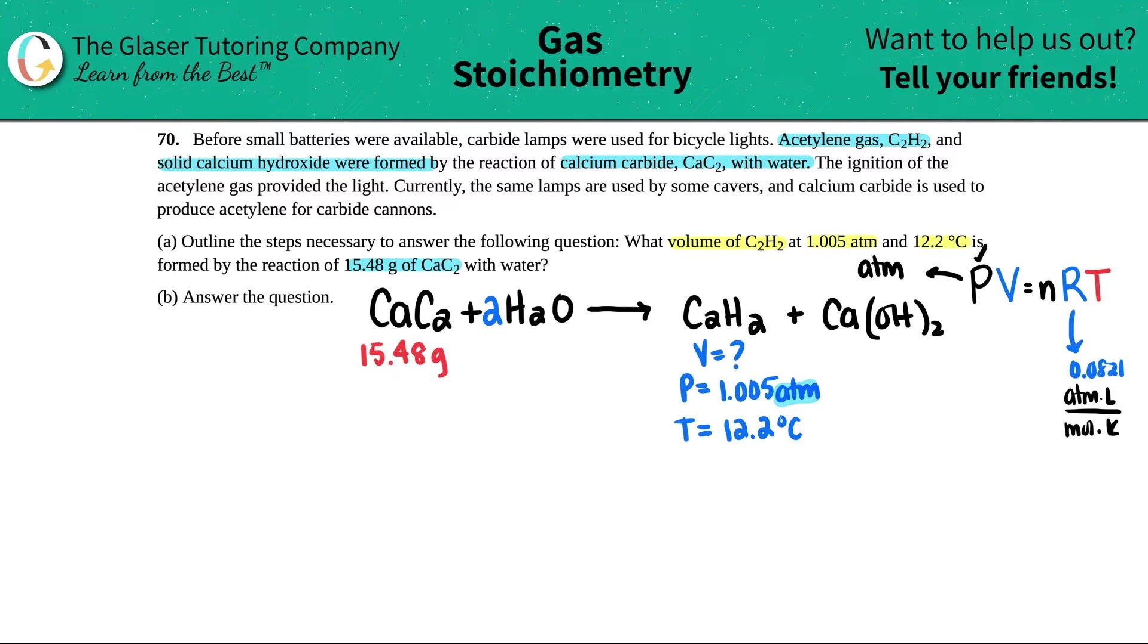The pressure has to be in ATM, and thank goodness they gave it to us in ATM, so no conversion there. The volume is what the question is asking for, so I'm going to solve for this. So that means I should know the other three numbers. We're always going to know the R value, that's a constant number. And the temperature, capital T, is in Kelvin. They did give us a temperature, but it's not in Kelvin. So we just have to convert that. Degrees Celsius into Kelvin is pretty easy conversion, all we got to do is just plus 273. 12.2 plus 273 is 285.2. So now I have the temperature.